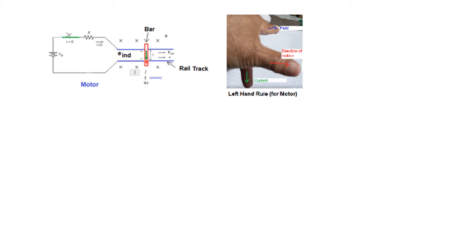When the switch is closed, the current will flow through the resistor, through the bar, and to the negative terminal. When we are supplying a current, a force will be induced — we know that in a magnetic field, if a conductor carries current, a force is exerted, and that force will move the bar. The question is: in which direction will it move — to the right or to the left?